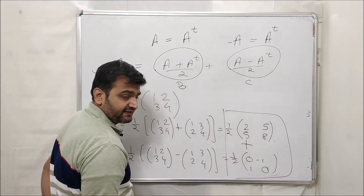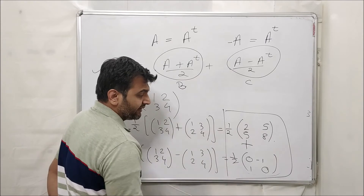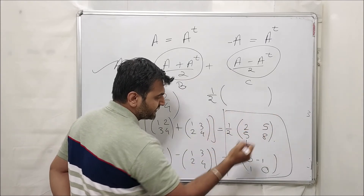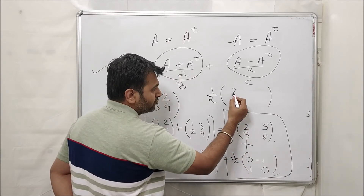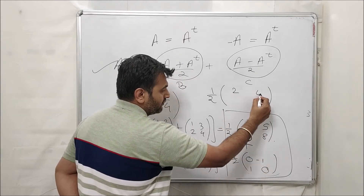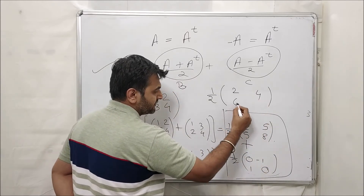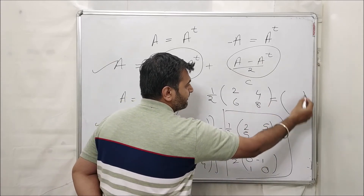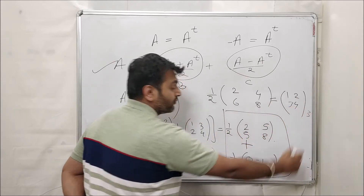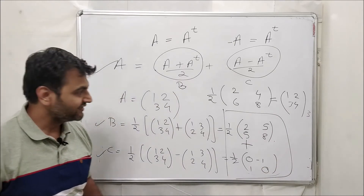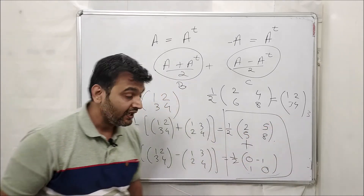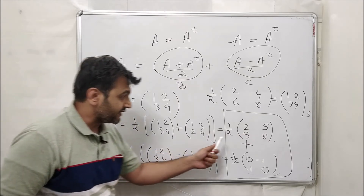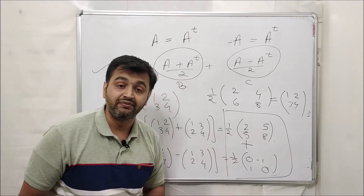Now let's verify B plus C equals A. Adding the two matrices: (1/2)([2,5;5,8] + [0,-1;1,0]) = (1/2)[2, 4; 6, 8] = [1, 2; 3, 4]. We get A back, confirming you can always write your matrix as a sum of a symmetric and a skew-symmetric matrix.